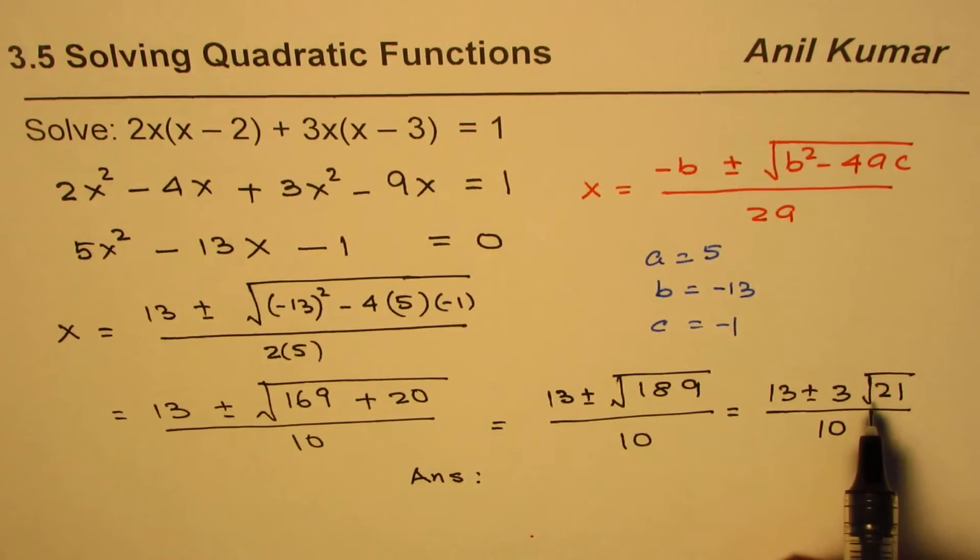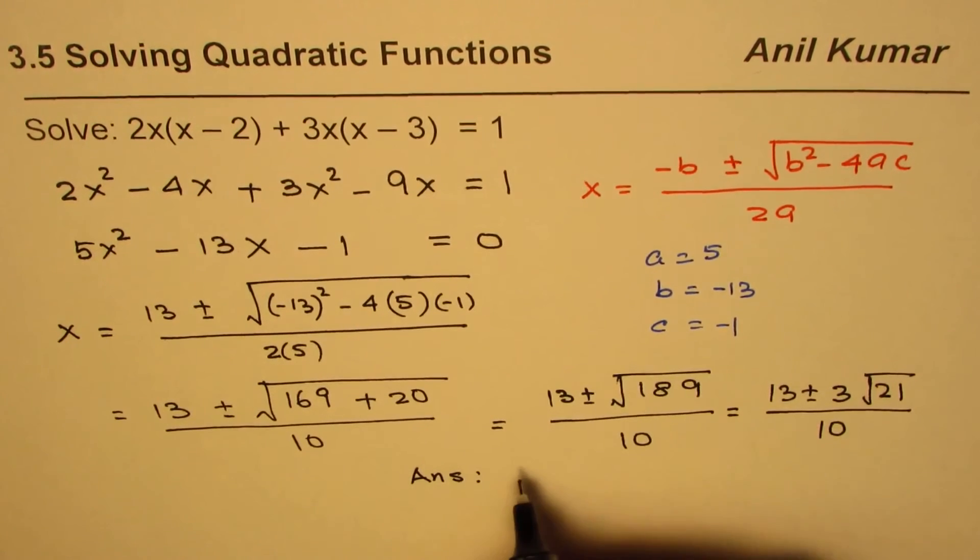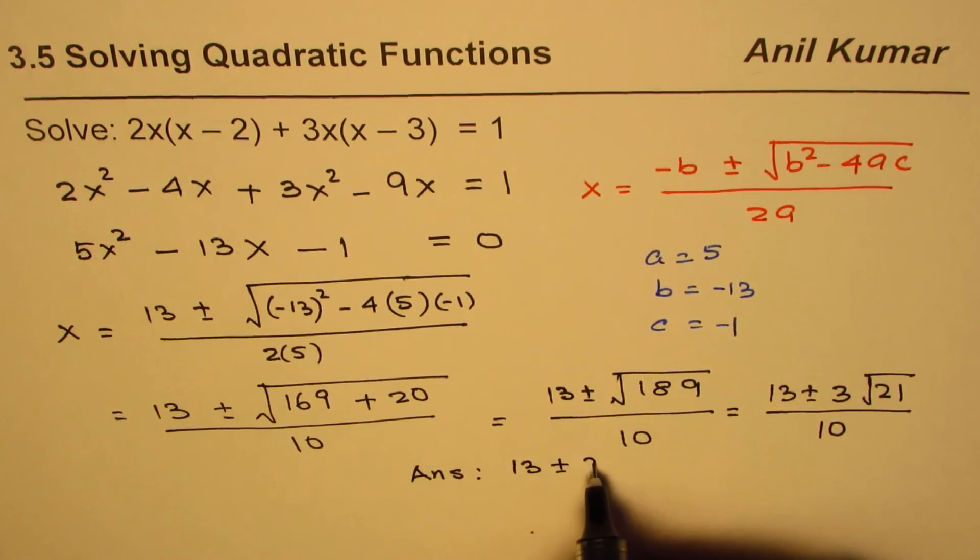You can calculate and round your answer to those many places. But the exact answer will be 13 plus or minus 3 square root 21, divided by 10.